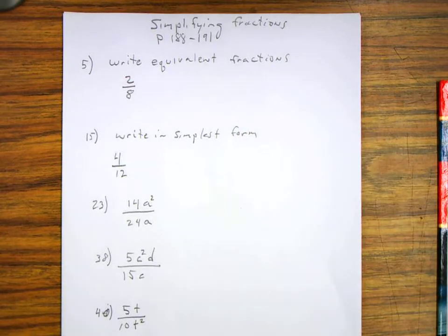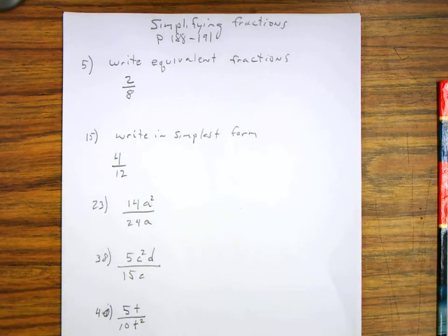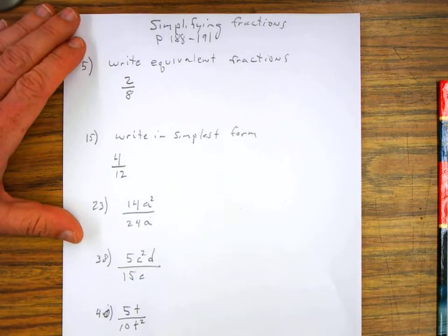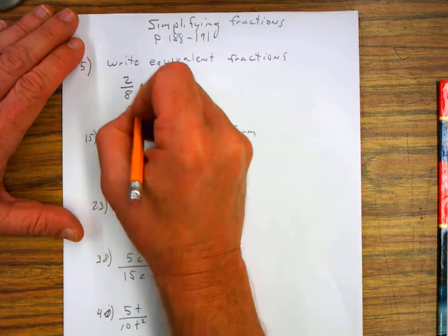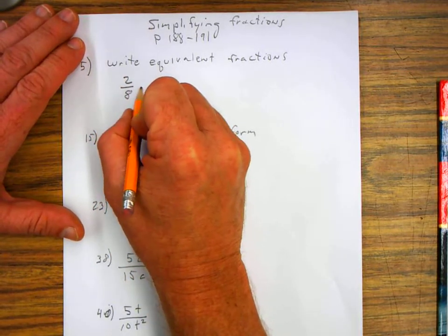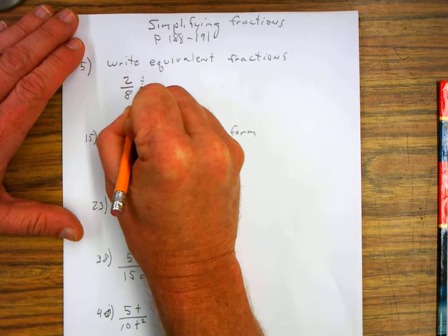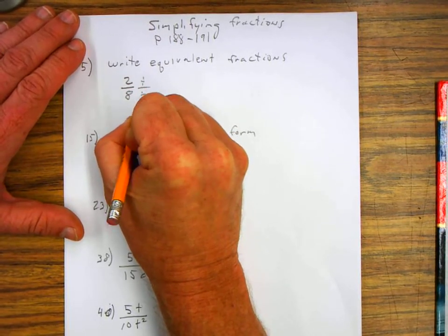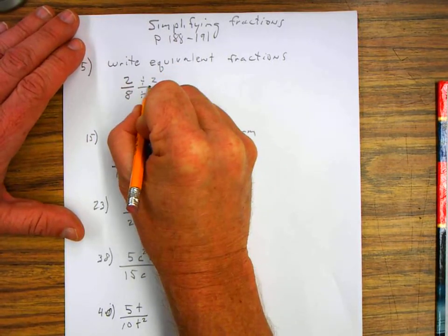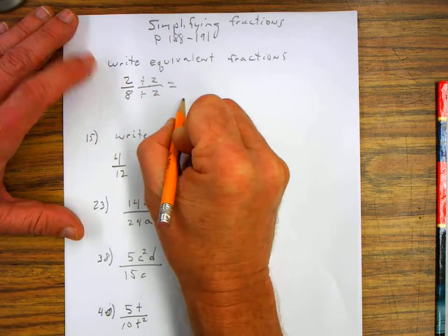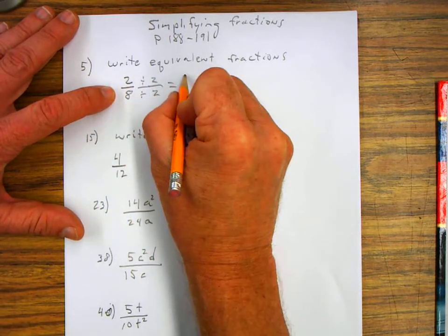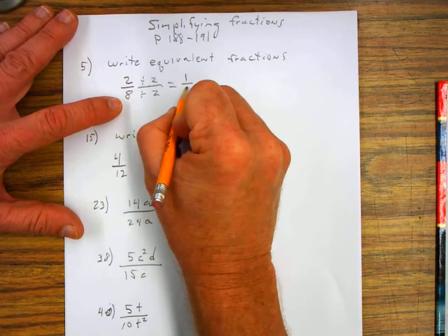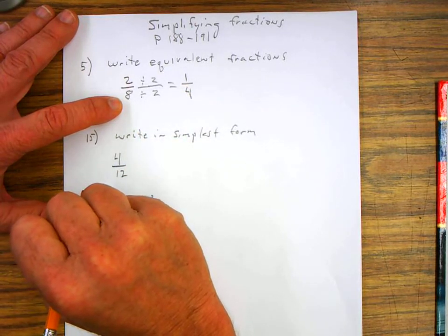Number five. The problem says write equivalent fractions. So they give us two over eight. So an equivalent fraction, well I can divide both the top and the bottom by the number two over two. And two divided by two is equal to one. Eight divided by two is equal to four. So there's one equivalent fraction.